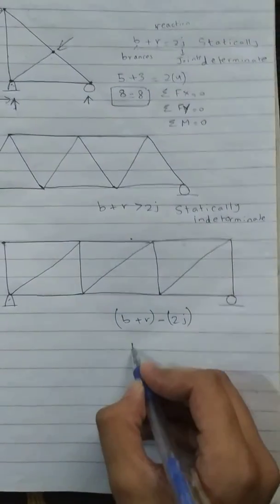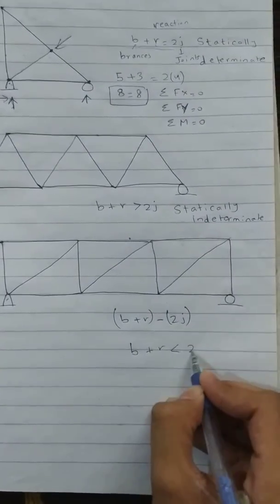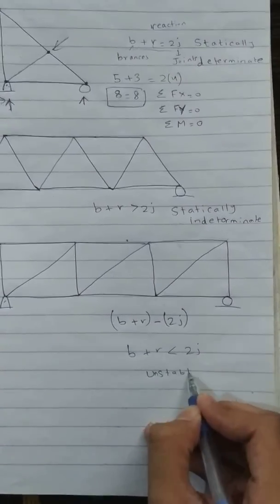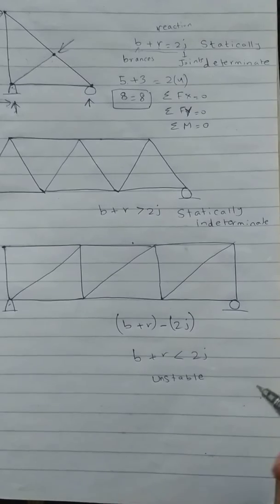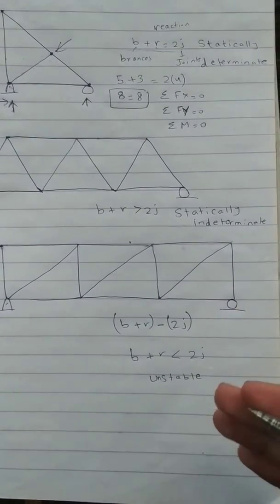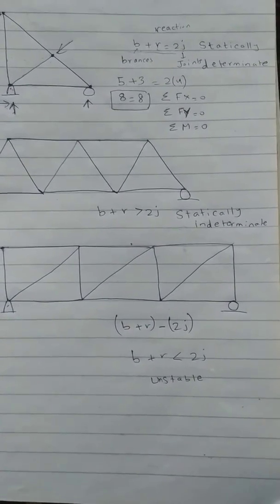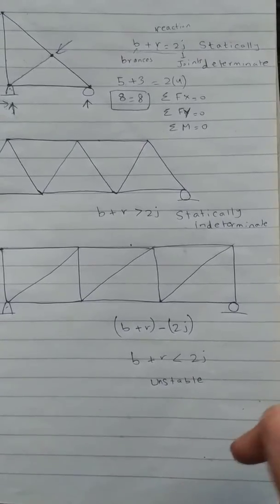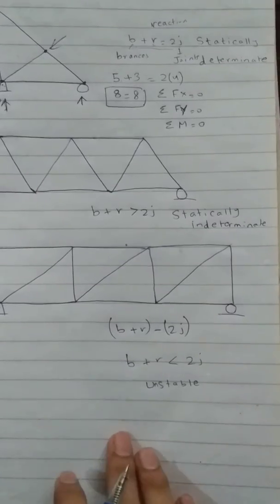But if b + r is less than 2j, then the truss will be unstable, meaning that if loading is applied to this truss it will cause it to collapse. There will be insufficient members or bars or reactions to constrain all the joints, so that truss will not be stable.